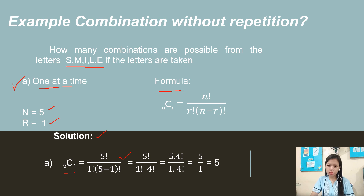So substitution of the formula for one at a time: we have 5 factorial over 1 factorial times 4 factorial. Simplifying: 5 times 4 factorial over 1 times 4 factorial — we cancel out 4 factorial, and we get 5 over 1, which equals 5.